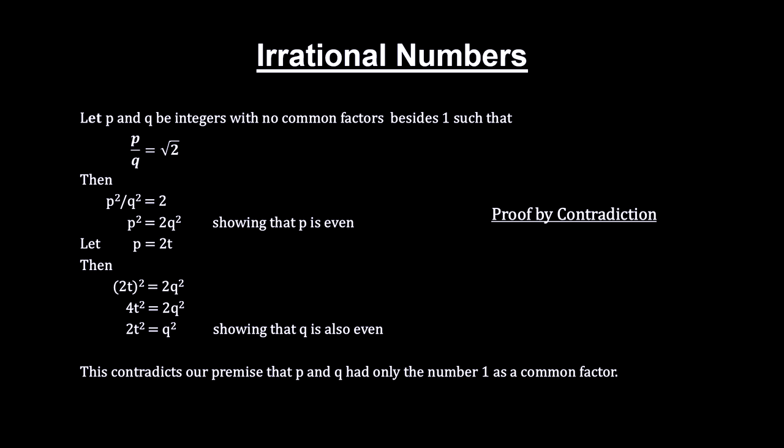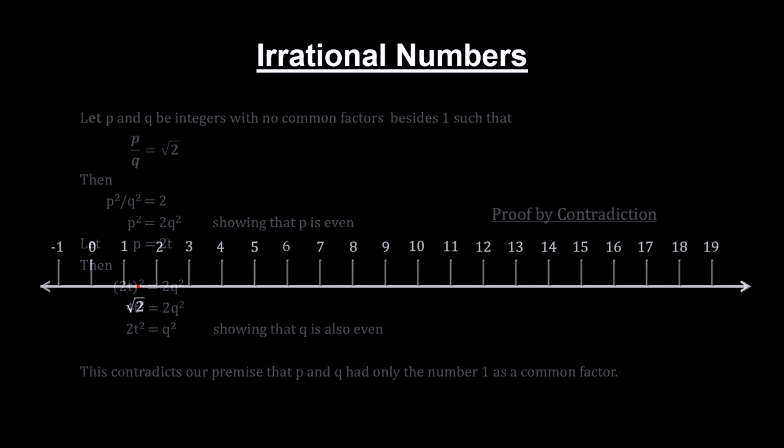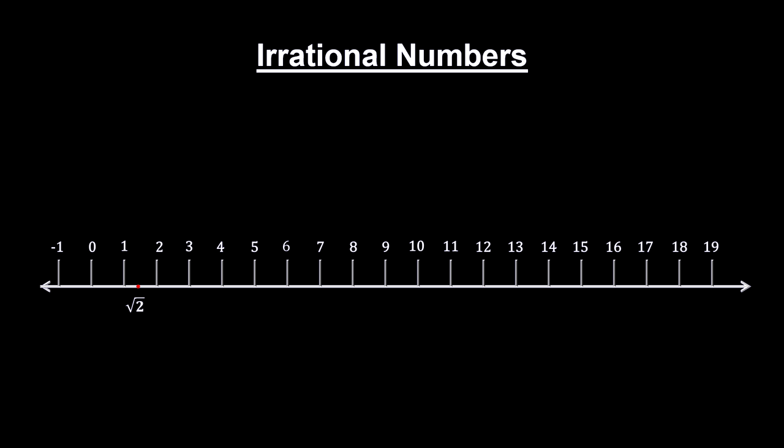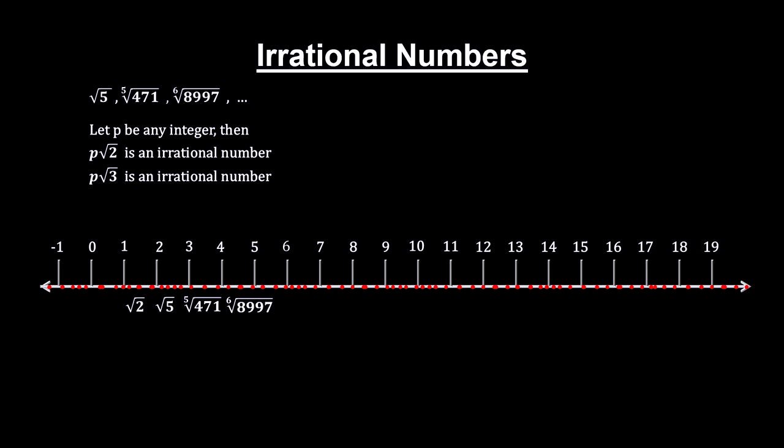Therefore, it cannot be expressed as a rational number. In fact, the nth root of any number that isn't a perfect n square is irrational. Add to that the fact that any irrational times irrational will be irrational, and you can see that the set of irrational numbers is infinite.